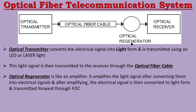An extra section in the system is the optical regenerator, which acts as an amplifier. As light travels through the cable over a long distance, the intensity of the light decreases — meaning the light signal becomes weaker. The focus and intensity reduce as the signal propagates.